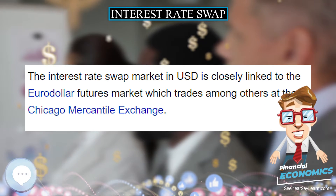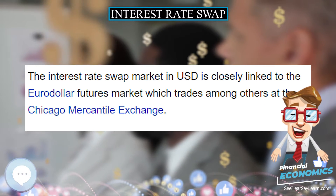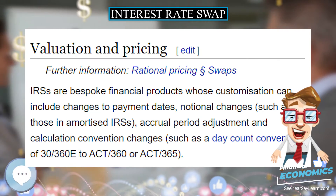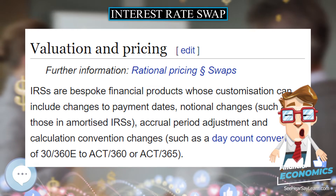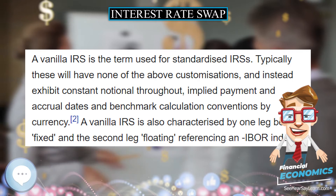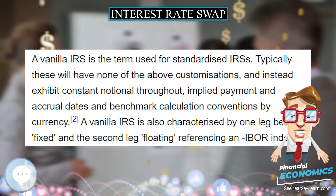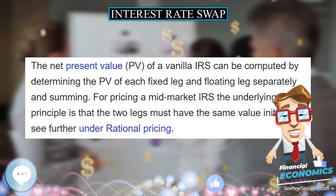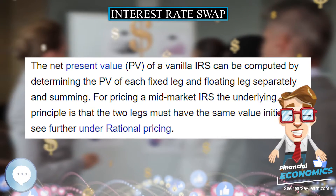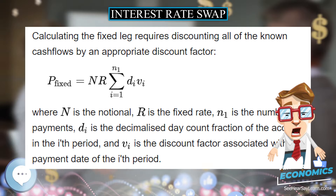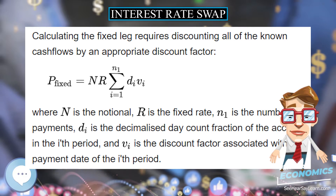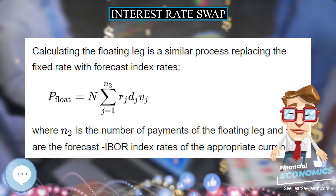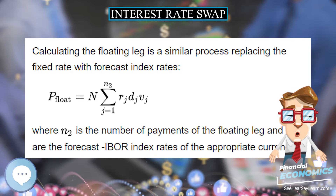The floating index is commonly an interbank offered rate (IBOR) of specific tenor in the appropriate currency of the IRS — for example LIBOR in USD, GBP, EURIBOR in EUR, or STIBOR in SEK. To completely determine any IRS, a number of parameters must be specified for each leg. Each currency has its own standard market conventions regarding the frequency of payments, the day count conventions, and the end of month rule.